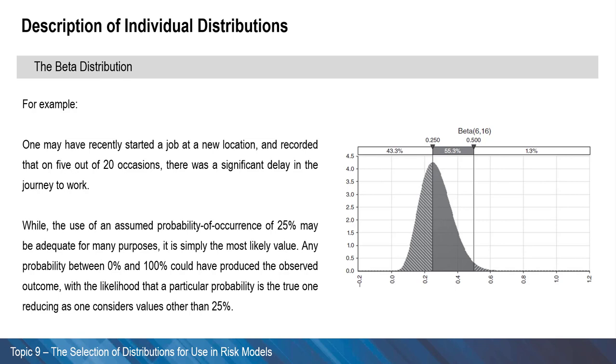Any probability between 0 and 100% could have produced the observed outcome, with the likelihood that a particular probability is the true one reducing as one considers values other than 25%. The figure shows the beta distribution that corresponds to the above situation. The x-axis represents the true but unknown probability, and the y-axis is the relative likelihood that such probability would produce the observed outcomes.